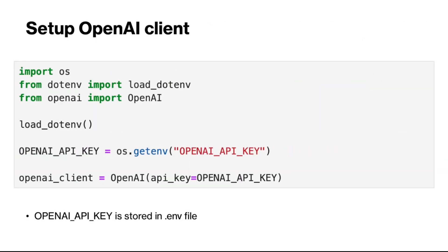Now we need to set up the OpenAI client. I have already created an OpenAI API key from my account and have stored it in a .env file located in the same directory as this notebook. By importing the dotenv package, I can load the OpenAI API key as an environment variable and then set up the OpenAI client as shown here.